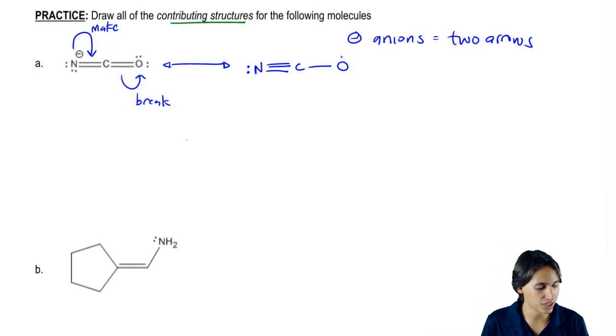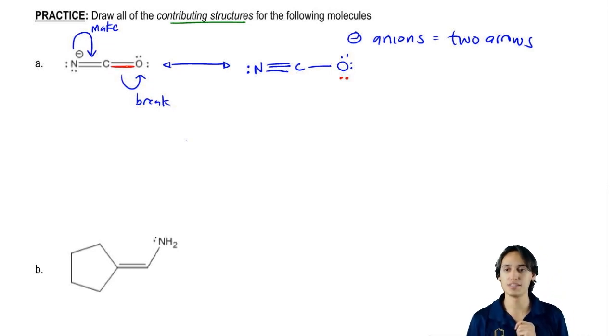And then oxygen has one additional lone pair because the electrons from that double bond became a lone pair. So basically the additional lone pair is this red one and that red one came from this bond over here breaking. Does that make sense?